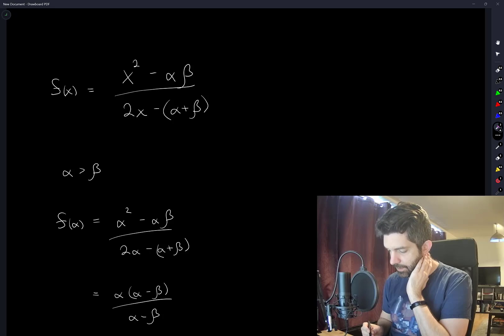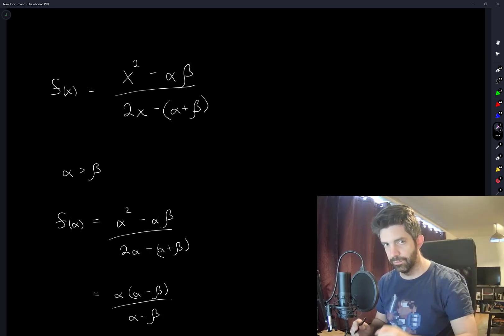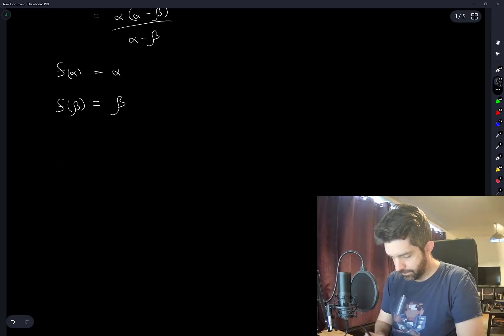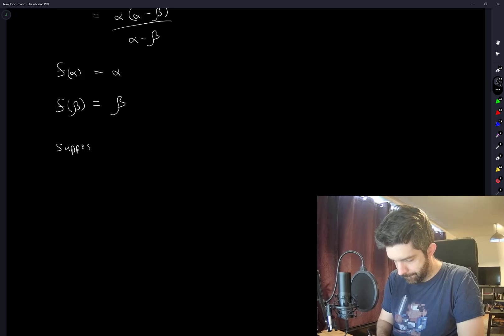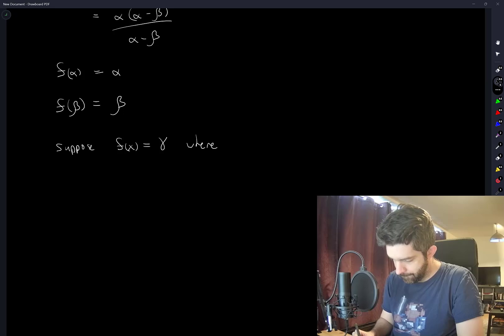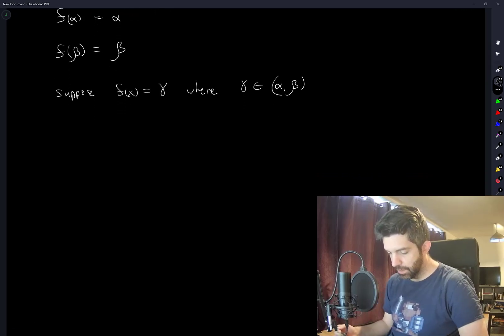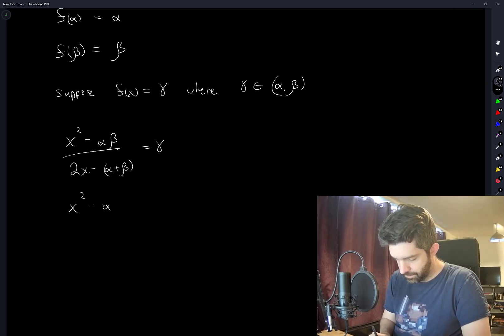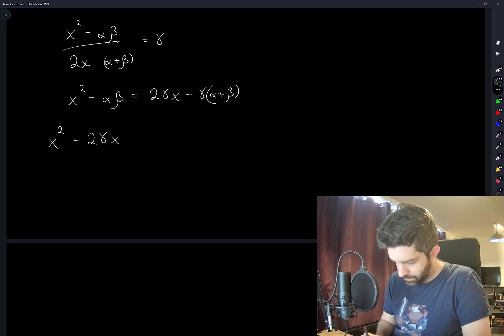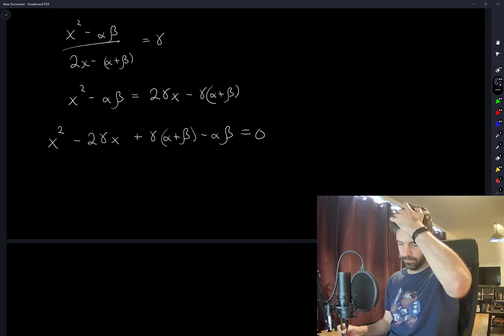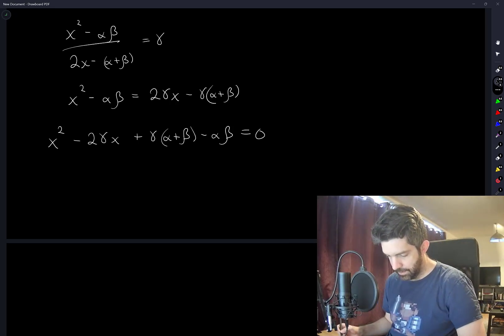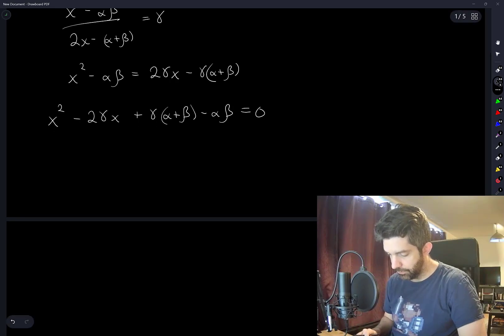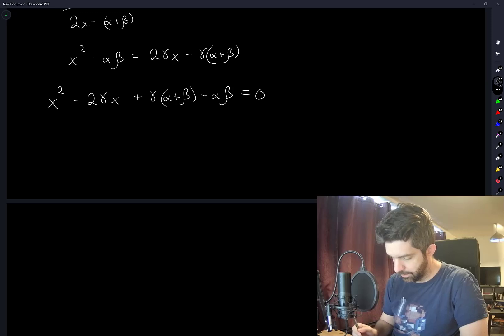And we should see that x does not have real values. Okay, so gamma is between alpha and beta. We're going to suppose that f of x is equal to gamma. Okay, so any value of x such that f of x equals gamma has to satisfy this. And now I'm going to solve for x. This is a quadratic polynomial.